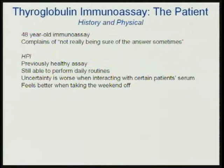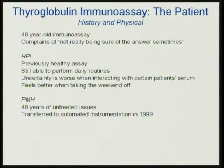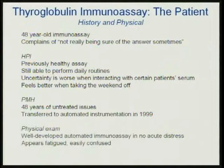History of present illness was a previously healthy assay — still able to perform its daily routines. The uncertainty in this immunoassay is much worse when interacting with certain patients' serum, but it always feels better when it takes the weekend off. Past medical history: it's had 48 years of untreated issues, and it was transferred to automated instrumentation in 1999. On physical exam, we have a well-developed automated immunoassay in no acute distress, but it does appear fatigued and easily confused. The diagnosis: a typical immunoassay.